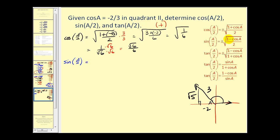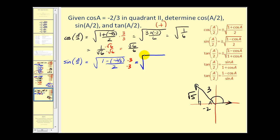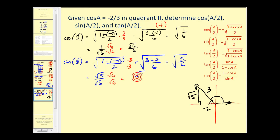We have the square root of one minus cosine A. So one minus negative two thirds, all over two. Clearing the fraction by multiplying the top and the bottom by three, we'd have six again in our denominator. And here we'd have three plus two, which equals the square root of five sixths, which equals the square root of five over the square root of six. Rationalizing, we will have the square root of thirty all over six.